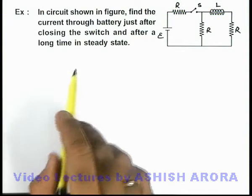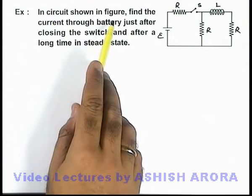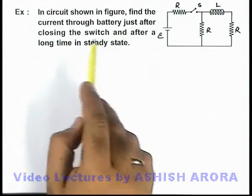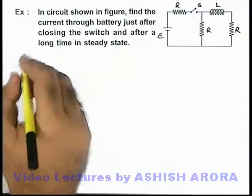In this example we are given that in the circuit shown in figure, we are required to find the current through battery just after closing the switch and after a long time in steady state.